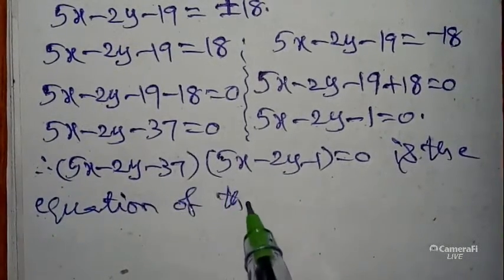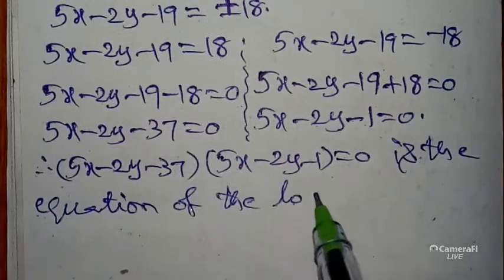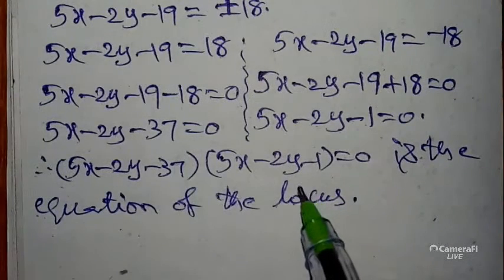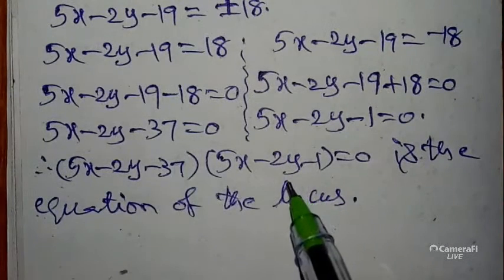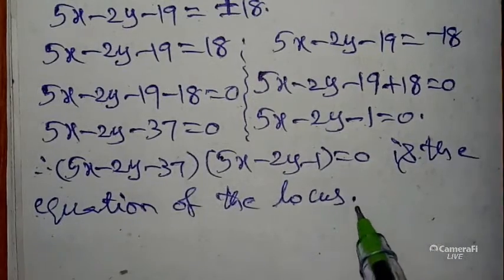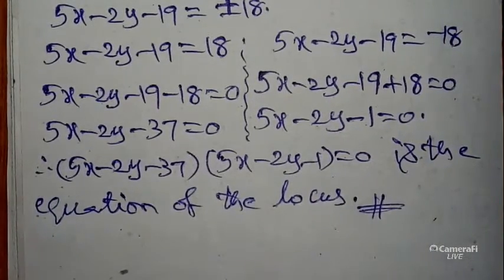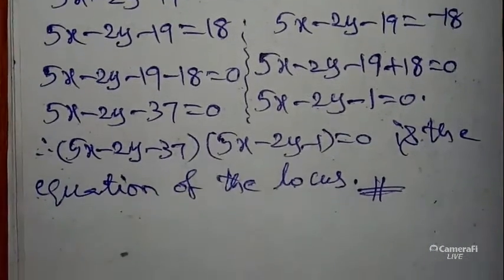Multiplying the two equations together: (5x - 2y - 37)(5x - 2y - 1) = 0. This is the equation of the locus. You can leave the answer in this factored form and you will get full marks.